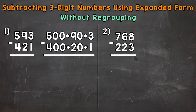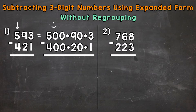Let's start with 593. I already put these into expanded form, but let's review here. So 593 equals: we have a five in the hundreds place, so that represents five hundreds and has a value of 500. We have a nine in the tens — that represents nine tens and has a value of 90. The three is in the ones place; it represents three ones and has a value of three.